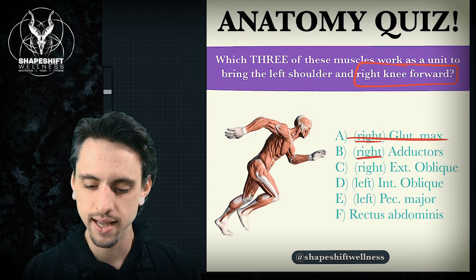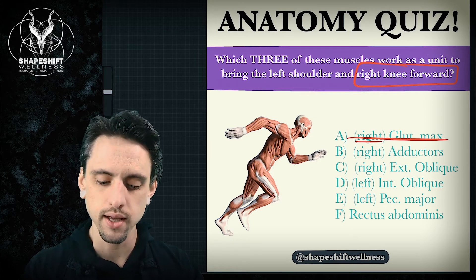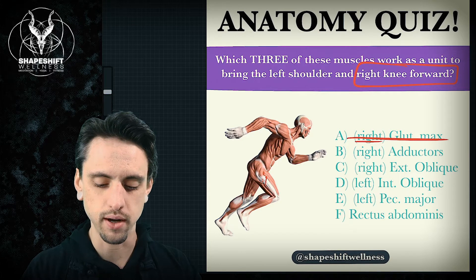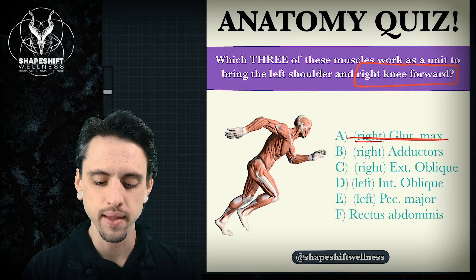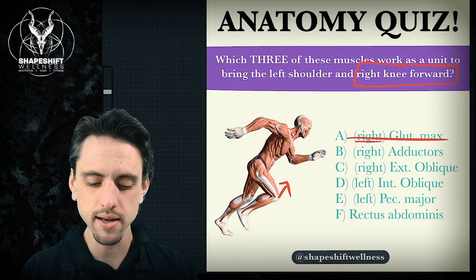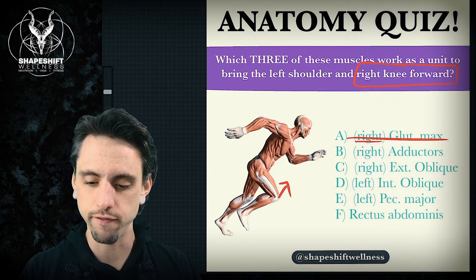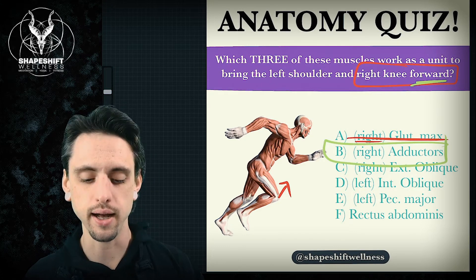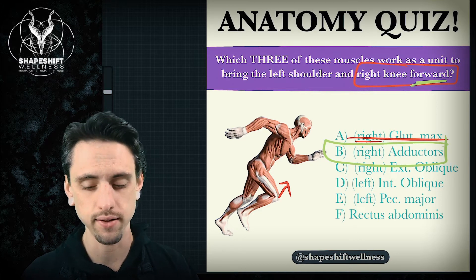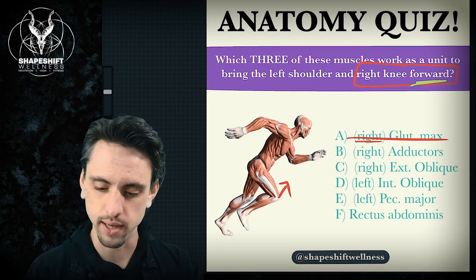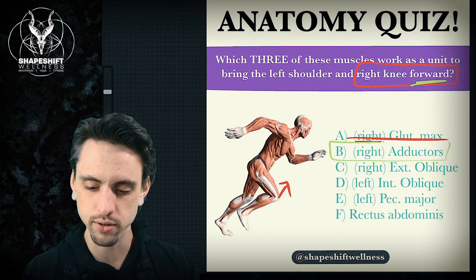Next, right adductors. The adductors are on the inside of the thigh, and they would bring the knee in towards the midline and help to flex the knee a little bit. Does that look forward? It looks pretty forward to me and it helps to bring the knee in towards the midline. So that I would say is a correct answer — here's one correct answer.